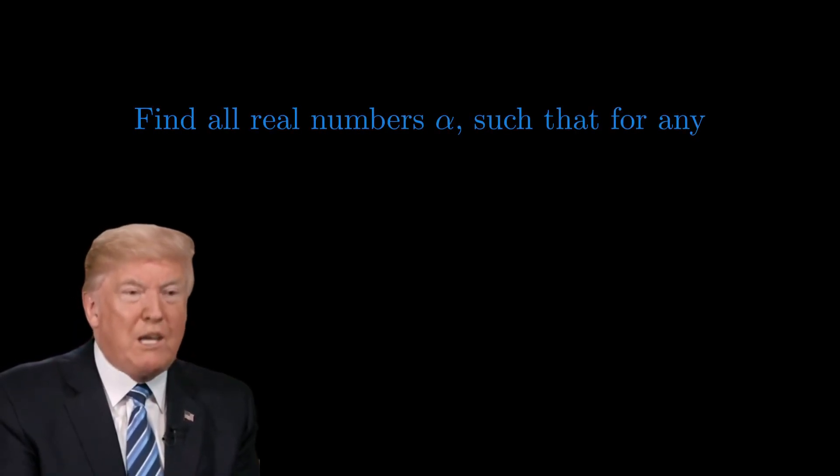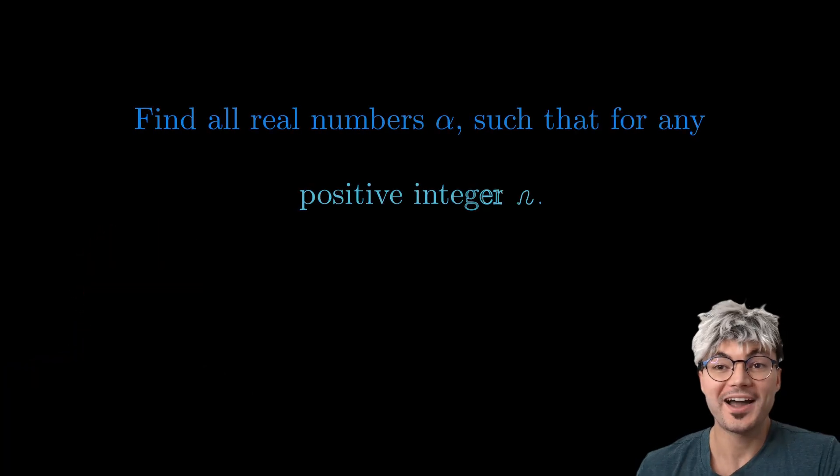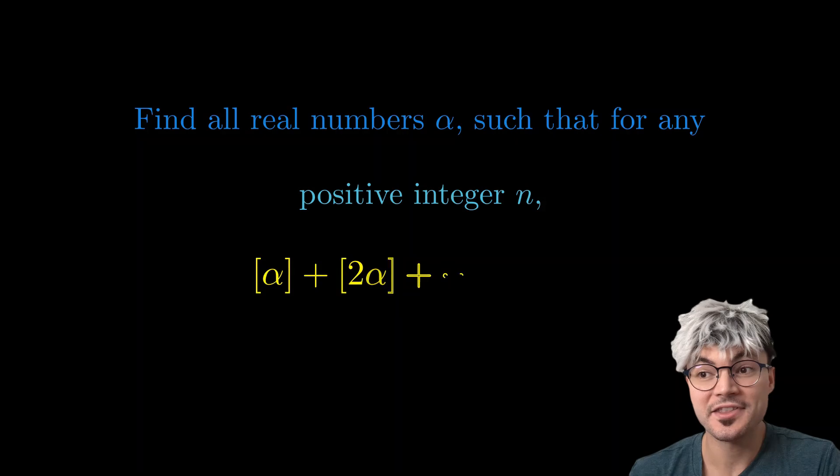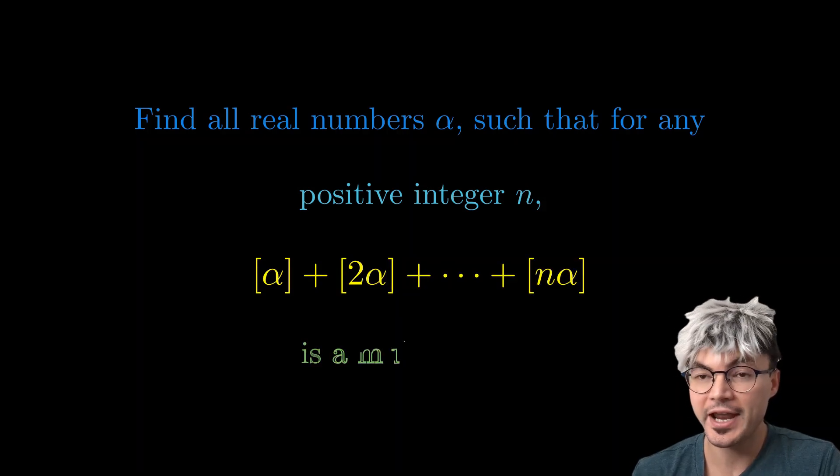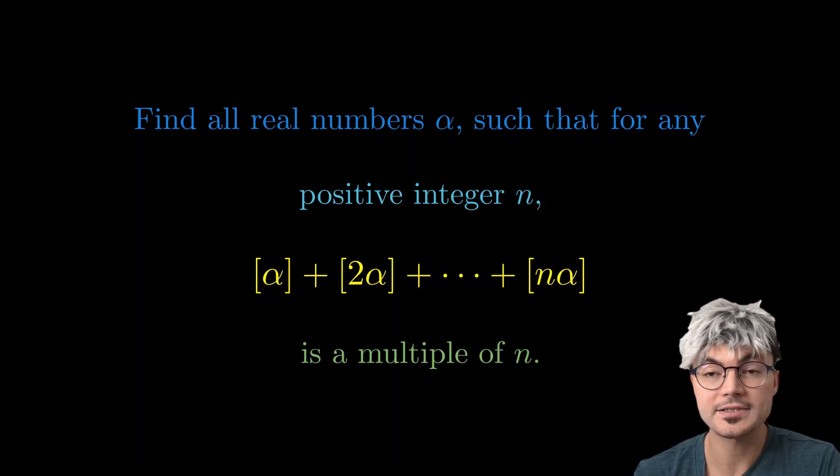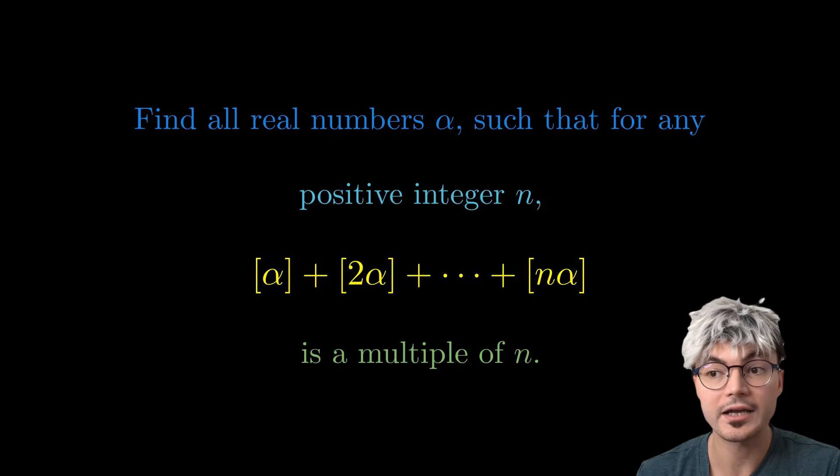I solved this while I was in the hospital. Hey Aladdin, let's start. Find all real numbers alpha such that for any positive integer n, the floor of alpha plus the floor of 2 times alpha till we get the floor of n times alpha is a multiple of n.